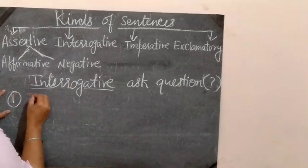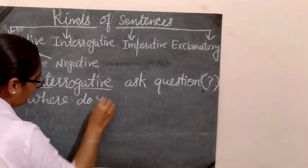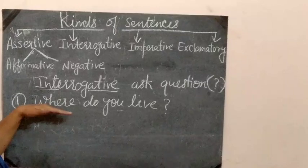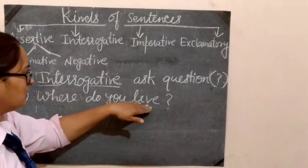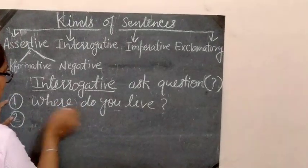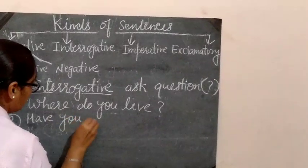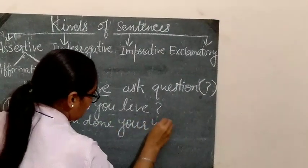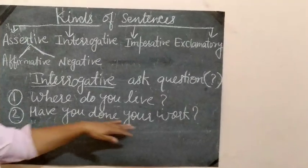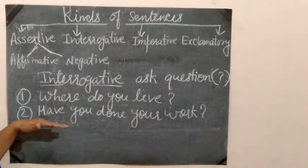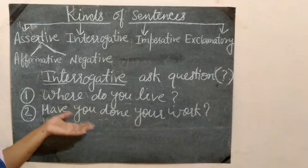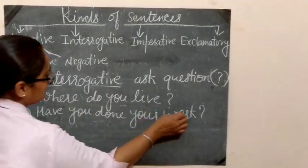Let's see. First example: 'Where do you live?' Here I put a question mark because this sentence is asking something, so it is an interrogative sentence. Second example: 'Have you done your work?' It is also an interrogative sentence because it asks a question — your teacher asks this in class many times. So this is an interrogative sentence.